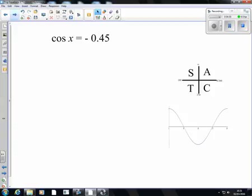Okay, we're looking at cos X of negative 0.45. So first off, what I'm looking at is, right, I'm looking at cos, I'm looking at a negative answer. So cos is positive in the first and the fourth, so it must be negative in the second and the third.